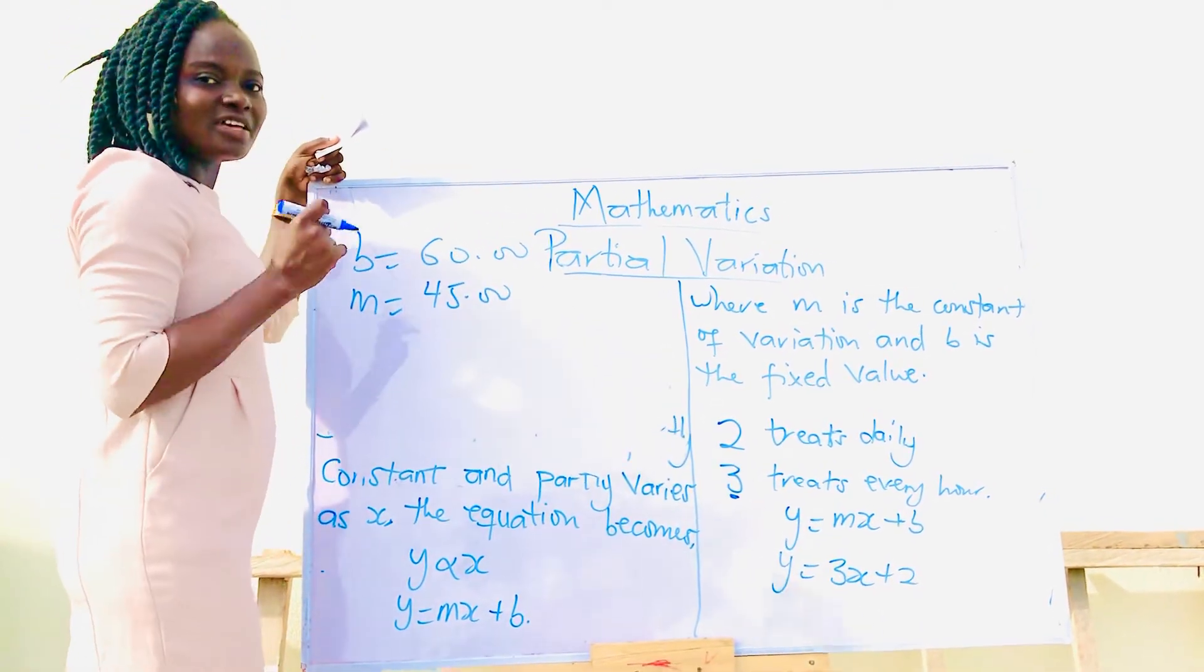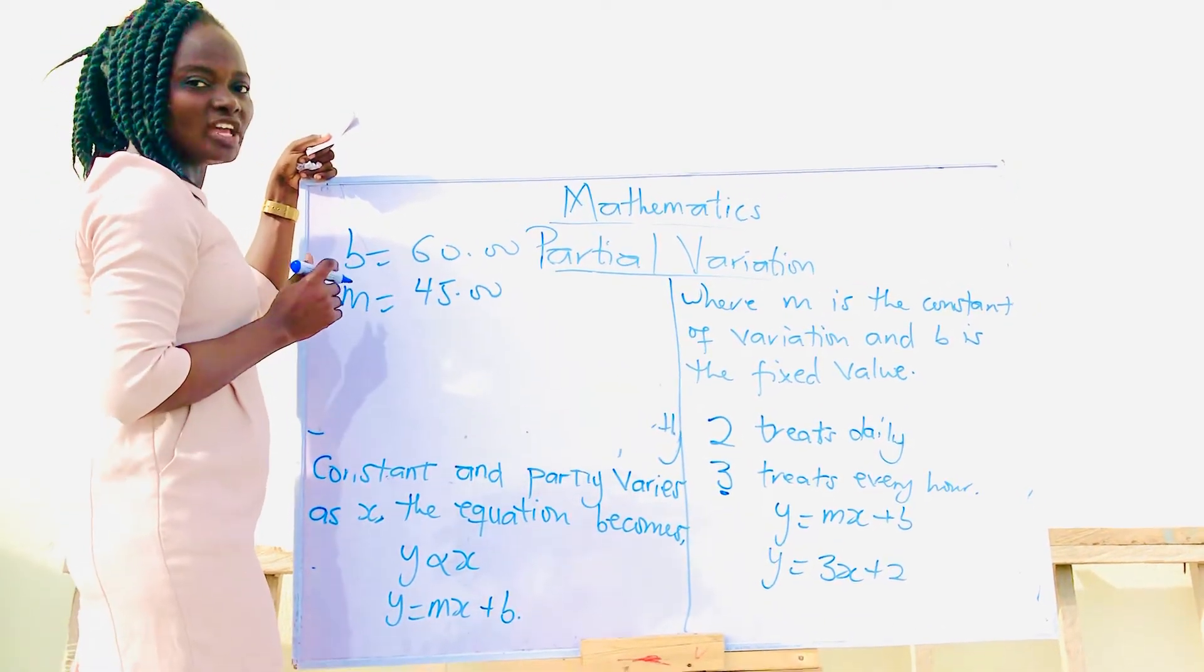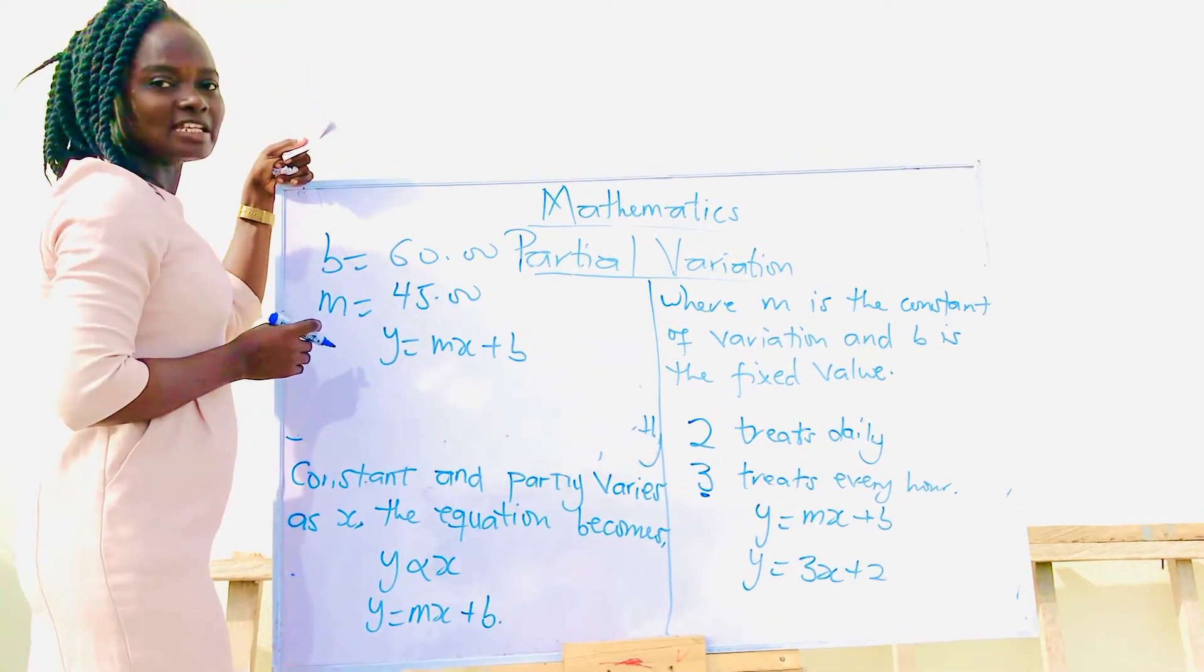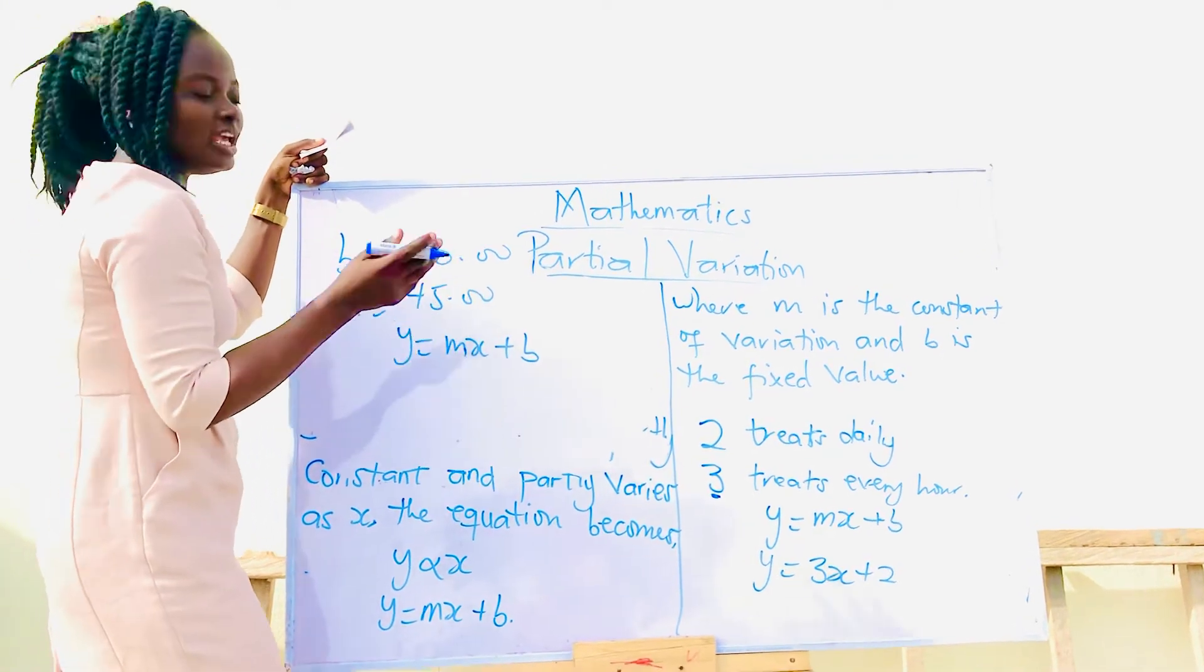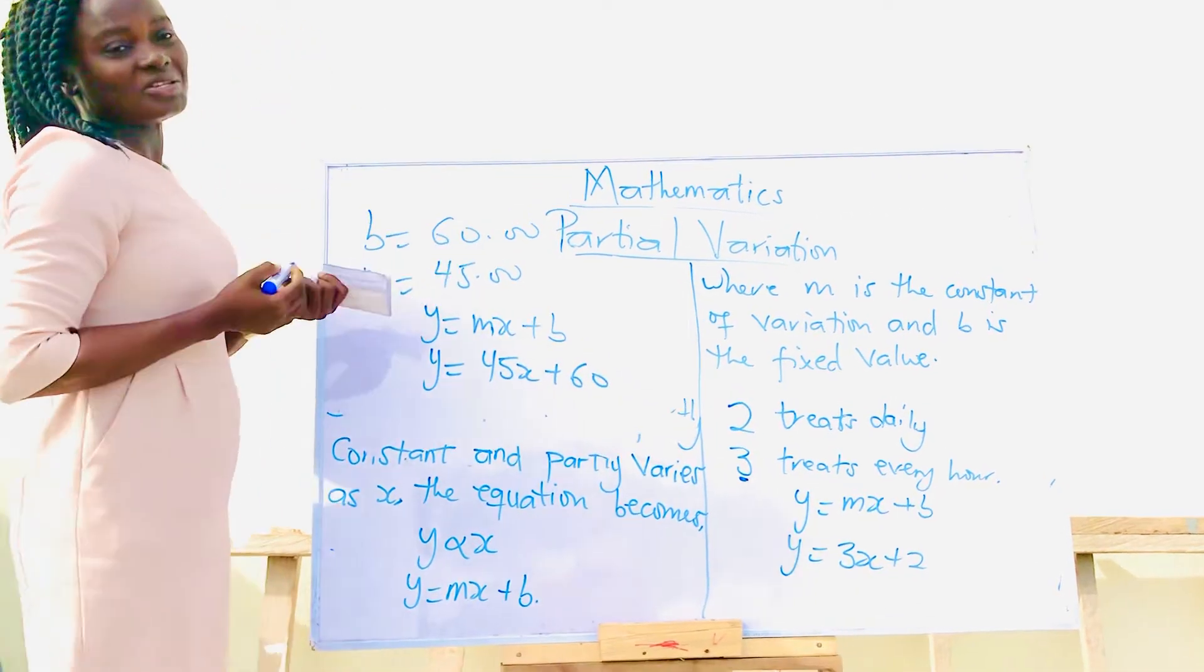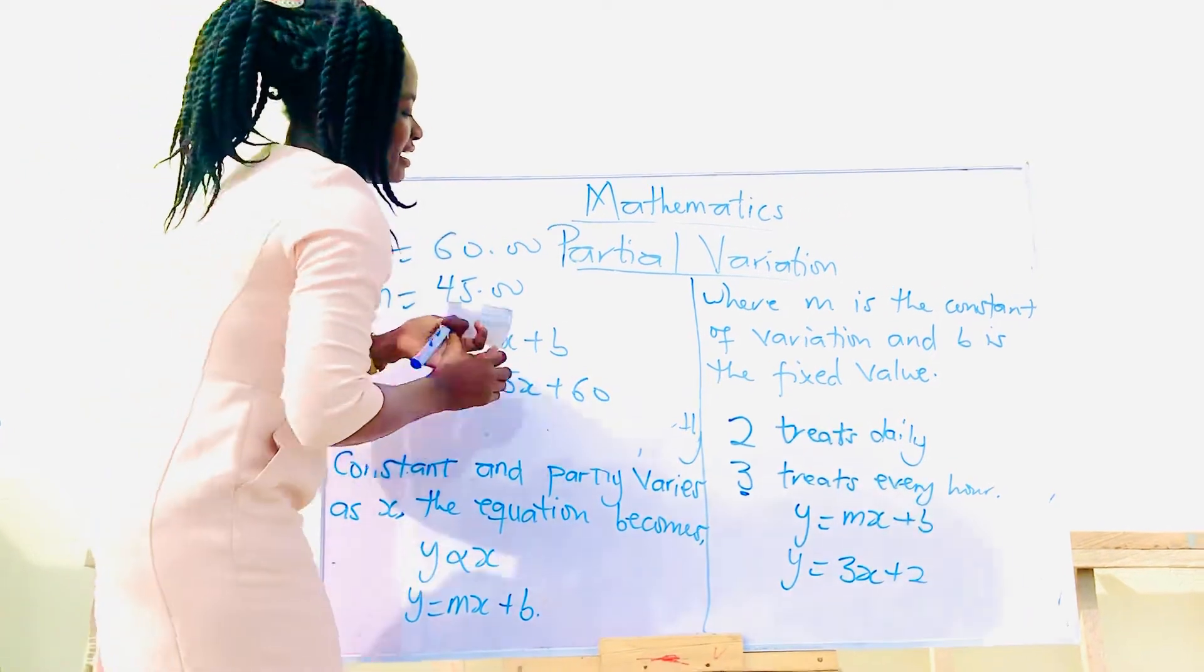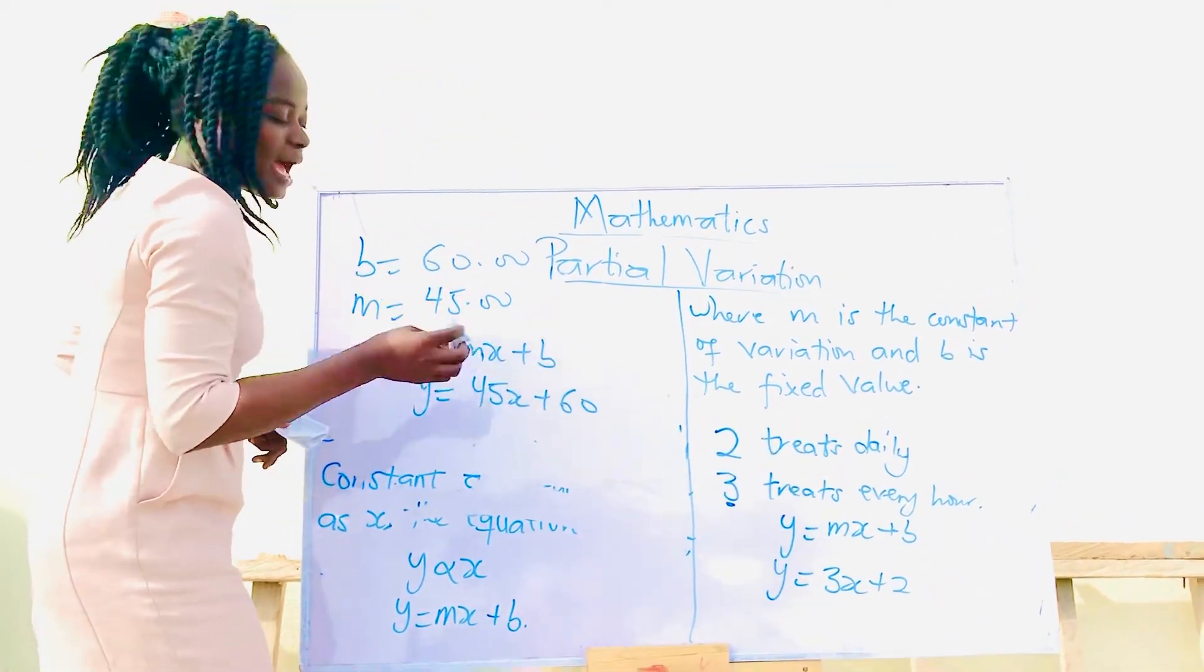Writing this equation, we first have to write our general equation, which is mx plus b equals y. By simple substitution, it becomes 45x plus 60 equals y. You can decide to draw the table for yourself.